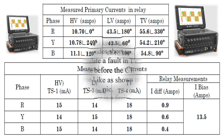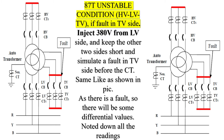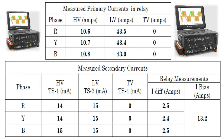One way of defining the differential current I0 and bias current IB is by using equations, where I1 is the magnitude of the power transformer primary current and I2 is the magnitude of the power transformer secondary current. The transformer stability test is performed to ensure that the differential relay does not operate under normal conditions, even when load currents are high, and only operates when a fault occurs in its protection zone.